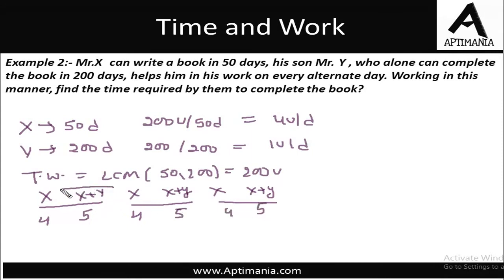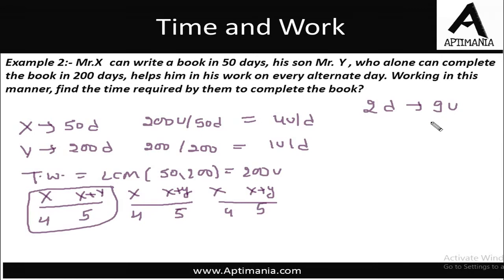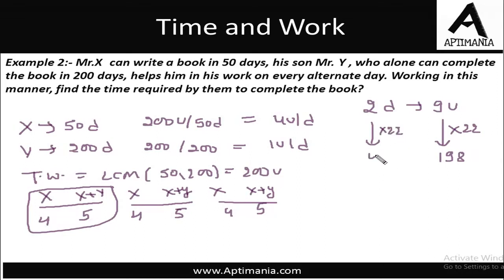So we can say that this is a cycle of 2 days and in this cycle they are completing a total of 9 units of work. Now to complete 200 units — 200 is not a multiple of 9 — so what we will do is multiply by a number which gives a result close to 200 but less than 200. We need to get 198, and we know that 9 times 22 gives us 198. So here also we multiply by 22. So in 44 days they must have completed 198 units of work, but the total work was 200 units, so still 2 units of work are remaining.